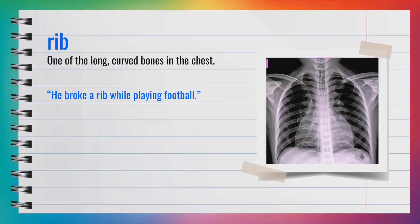The word rib, spelled R-I-B, is a noun. It signifies one of the long curved bones in the chest. For instance, he broke a rib while playing football. Ribs are essential for protecting the chest organs.